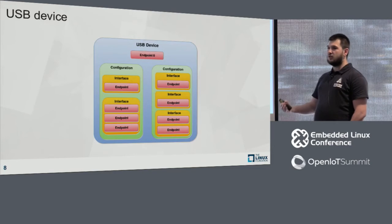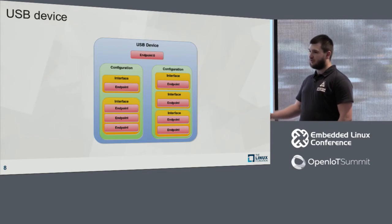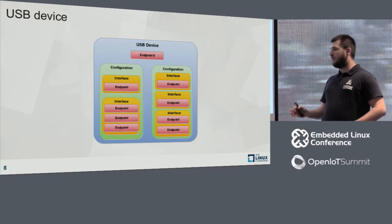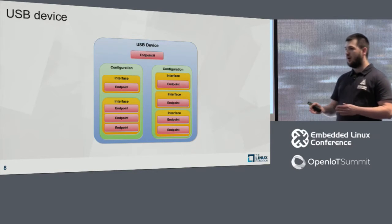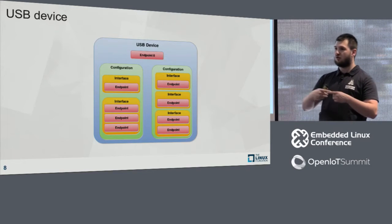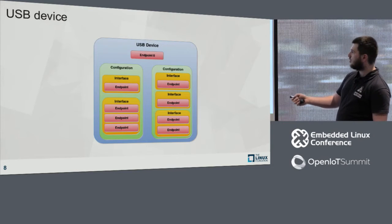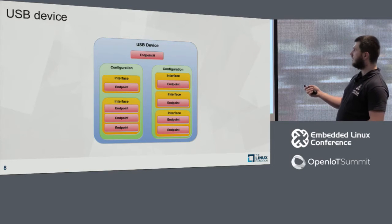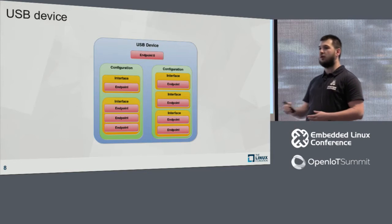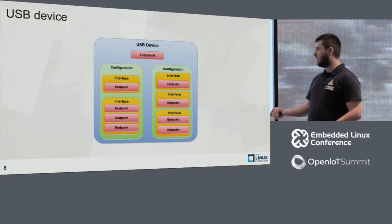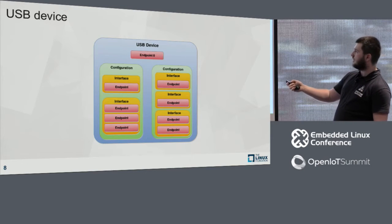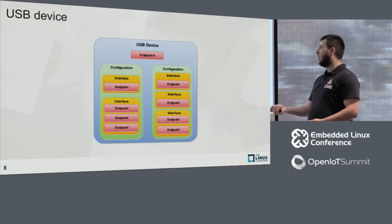Endpoints are grouped into interfaces. An interface is a group of endpoints implementing a well-defined functionality — usually two bulk endpoints for bidirectional communication. Interfaces are grouped into configurations. A single configuration may have multiple interfaces, all available simultaneously, but only one configuration may be active at a time. All interfaces from a configuration are only usable when that configuration is active. Endpoint 0 is not grouped into any interface — it's always available.